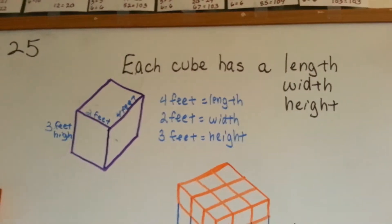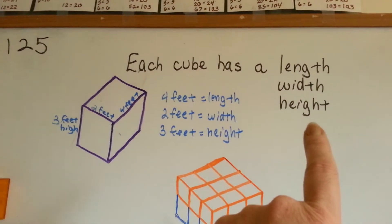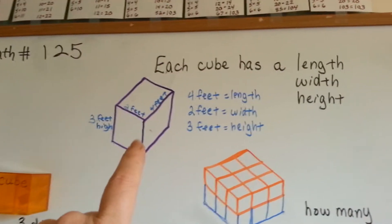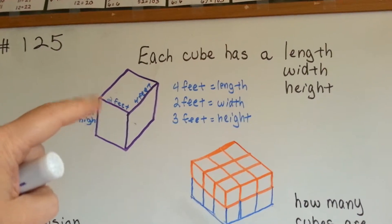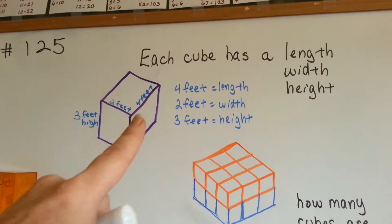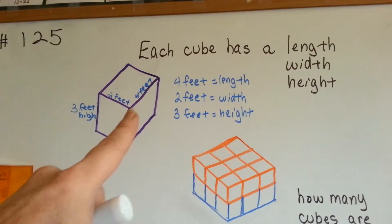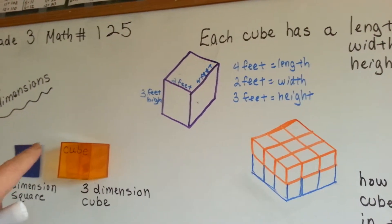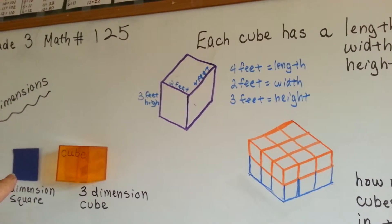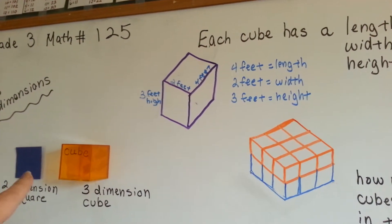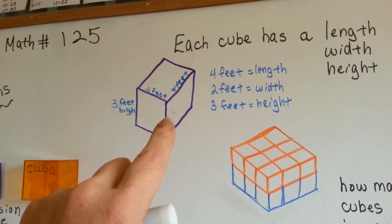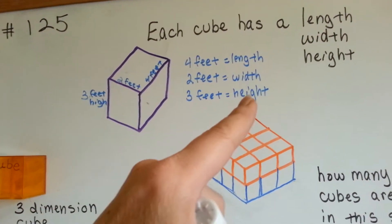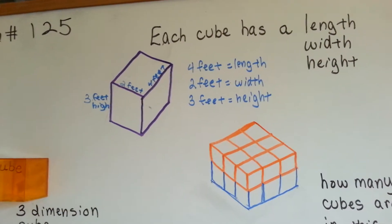Each cube has a length, a width, and a height, where 2 dimensions just has a length and a width. So this cube is 3 feet high, it's 2 feet wide, and 4 feet long. With a 2D piece of paper, we could say it's 2 inches this way or 2 inches that way, so it's a 4-inch square piece of paper. But with a cube, we would have to multiply the length times the width times the height to get the area of it.